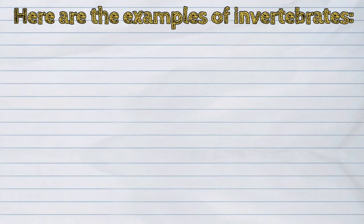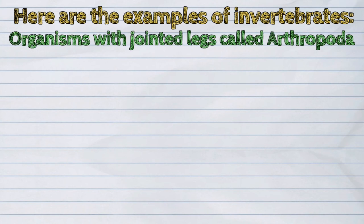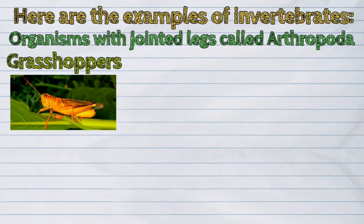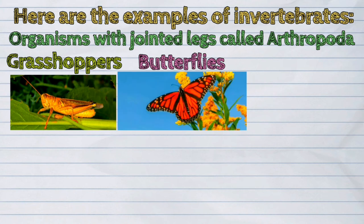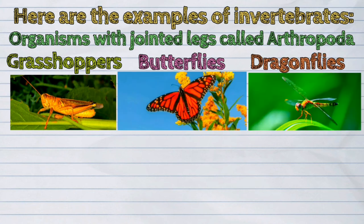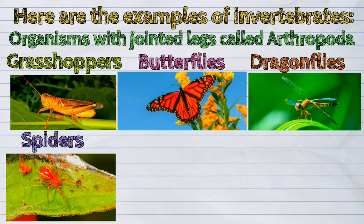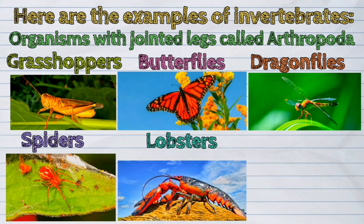The sixth example are the organisms with jointed legs, called Arthropoda. Insects such as grasshoppers, butterflies, and dragonflies belong to this group. Other members include spiders, lobsters, and crabs.